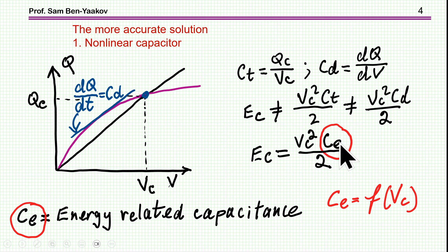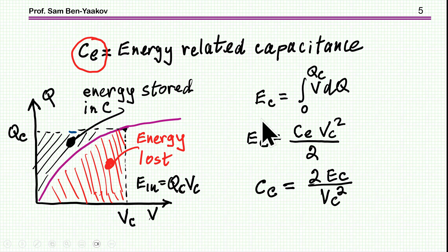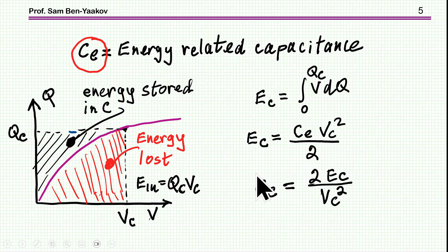If we have the energy-related capacitance, we can calculate the energy stored in the capacitor in the conventional way: energy equals V squared times C_energy over 2. The energy stored in the capacitor is the integral of V dQ over the range from 0 to a given endpoint. Using the concept of energy-related capacitance, the energy stored equals C_energy times V_n squared over 2. Therefore, the energy-related capacitance equals 2 times the total stored energy divided by V_C squared.